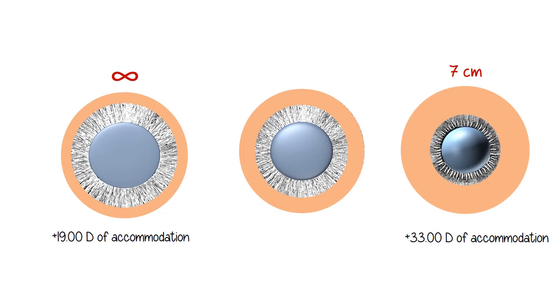We have here the ciliary muscles, zonule, and lens in three stages of accommodation. On the left, the eye is focusing in the distance at optical infinity. We see there the red infinity sign at the top. The ciliary muscle is relaxed, the zonules are taut, and the lens is flat. At rest, this lens is providing 19 diopters of accommodation.